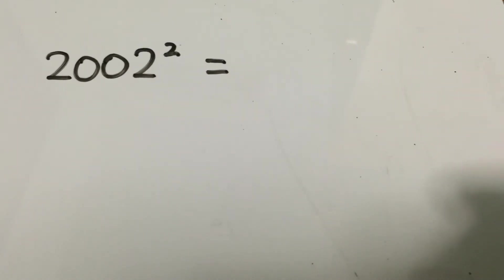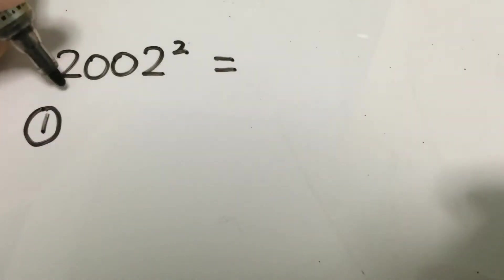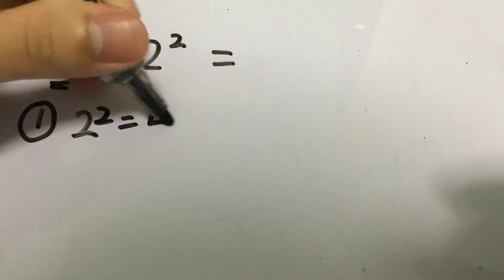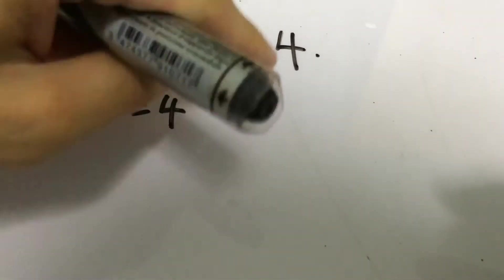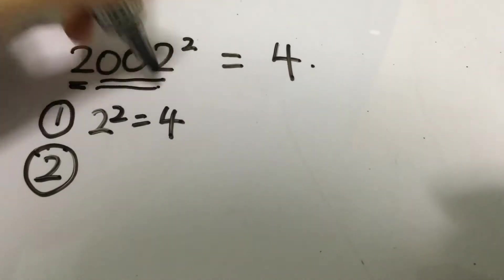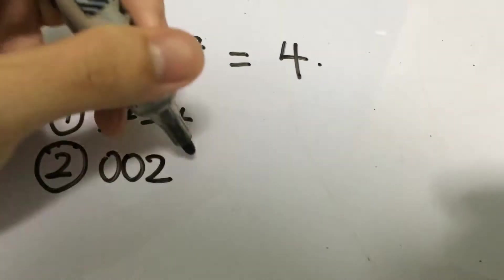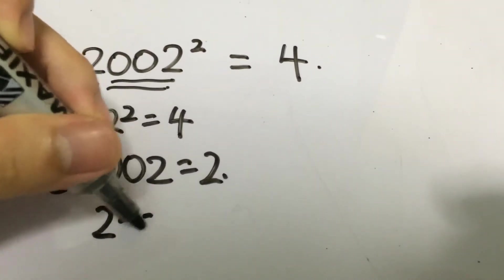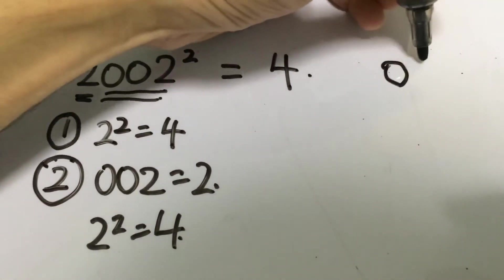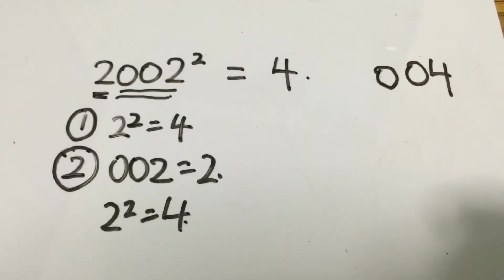Our first example is to calculate the square of 2002. The first thing you need to do is square the beginning digit. In this case, the beginning digit is 2, so 2 squared gives you 4 — that will be the beginning digits. The next step, step number two, you take the last three digits and square them. In this case that is 002, which equals 2, and 2 squared equals 4. But when you write it down, you have to write it in terms of three digits, so it will be 004.